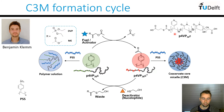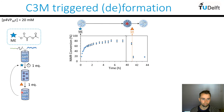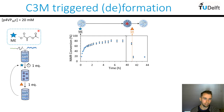For the first set of experiments, we're going to look at sequential additions of one equivalent of the fuel followed by one equivalent of our deactivating nucleophile — in this case the strong nucleophile mercaptoethanol. This should allow equilibrium formation of coacervate core micelles followed by regeneration back to the starting polymer solution. Starting with the ME activating species, we added one equivalent to our polyamine and polyanion mixture and followed it by NMR. NMR allows us to see the consumption of the activating species and the production of cationic groups on the polymer chain. We achieved around 80% conversion plateauing after two to four hours. We then added one equivalent of thiol to regenerate the neutral polymer, and that is exactly what we observed by NMR.